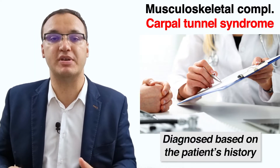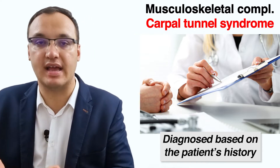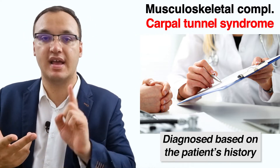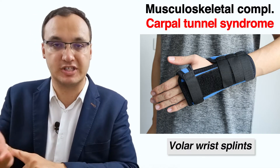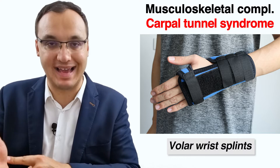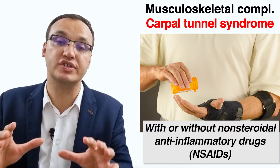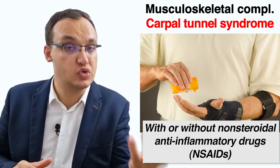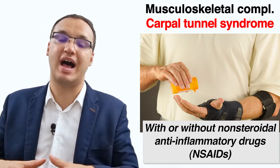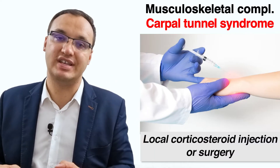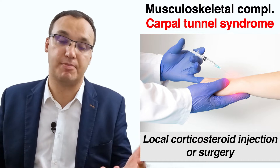Carpal tunnel syndrome is usually diagnosed based on the patient's history, symptoms, and clinical findings. Treatment includes using a volar wrist splint, particularly at night, with or without non-steroidal anti-inflammatory drugs. Corticosteroid injections and surgery are options if conservative management is unsuccessful.